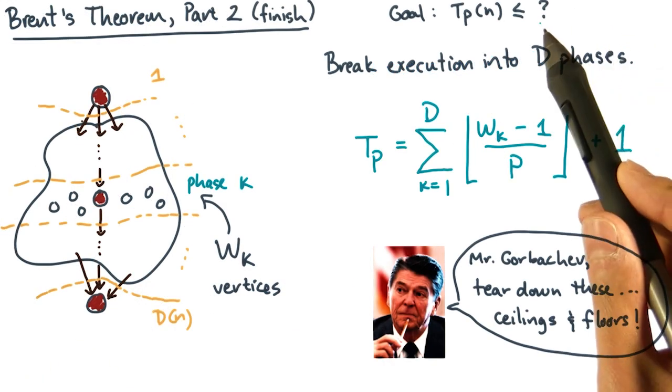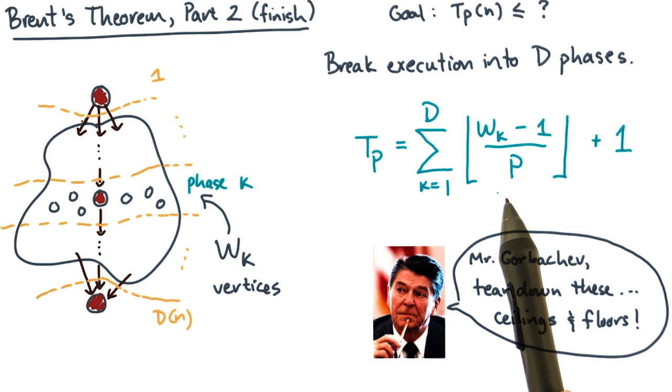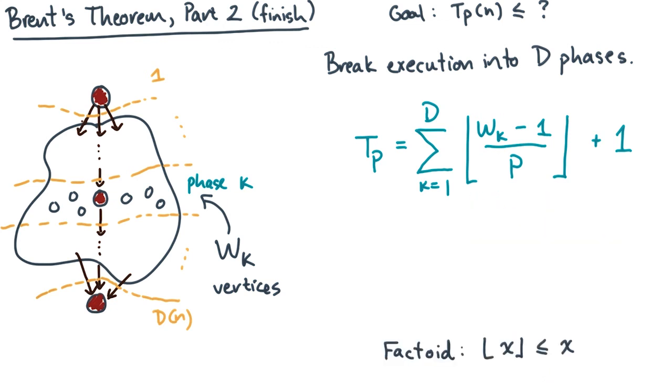Remember, our original question was to get an upper bound. So can we get an upper bound on the sum? Now the floor of something is always less than or equal to that something. Ha ha! That gives an upper bound and eliminates the floor.